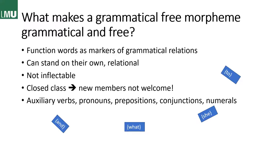The usual word classes for grammatical free morphemes are auxiliary verbs, pronouns like 'she,' prepositions like 'to,' conjunctions like 'and,' numerals — all those little function words.